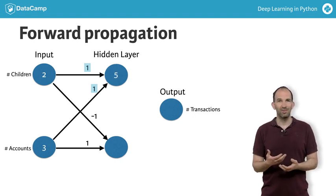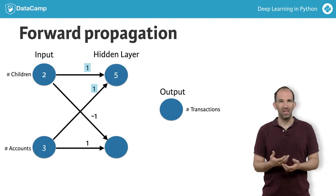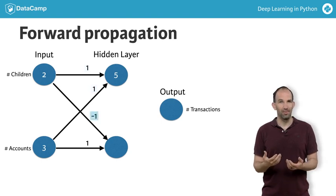Now we do the same to fill in the value of this node on the bottom. That is 2 times minus 1 plus 3 times 1. That's 1.